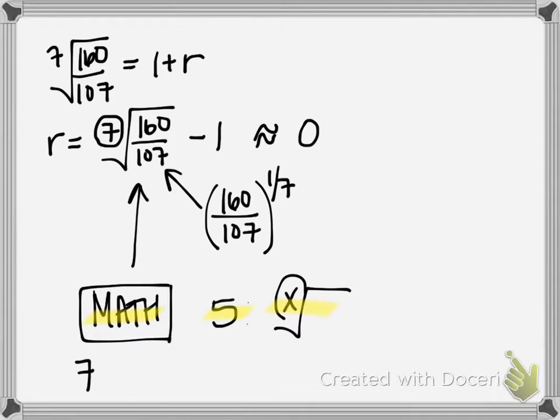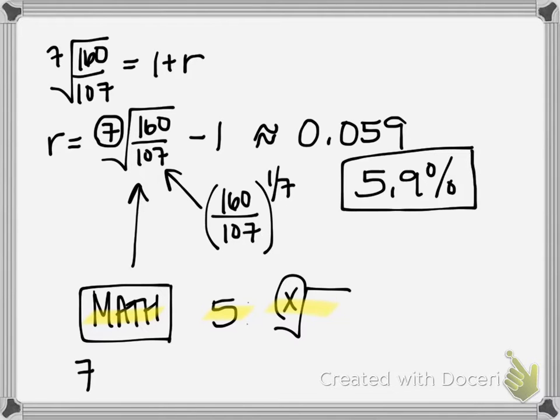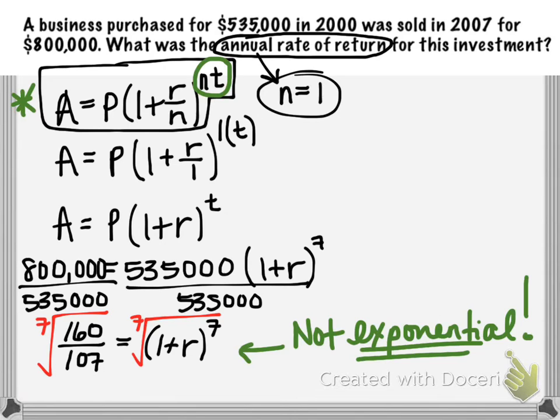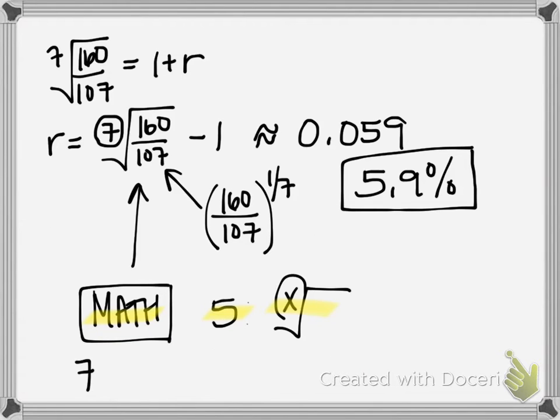I'm getting 0.059 as a rounded answer. Converting this decimal into a percentage gives us a 5.9% annual return on our investment. So going back to the beginning, if our original investment was $535,000 and in seven years it grew to $800,000, that means we had an annual rate of return of approximately 5.9%.